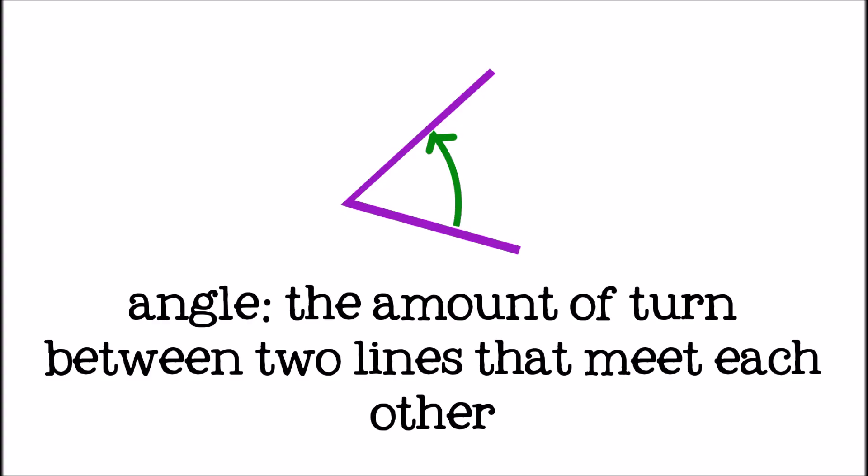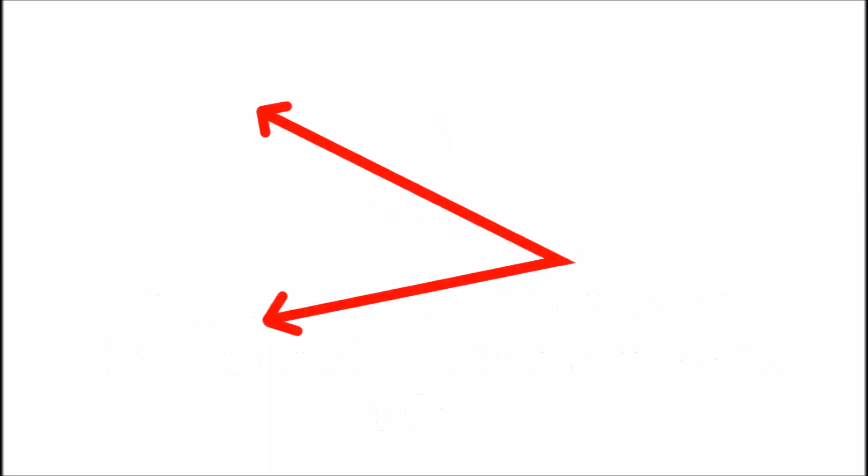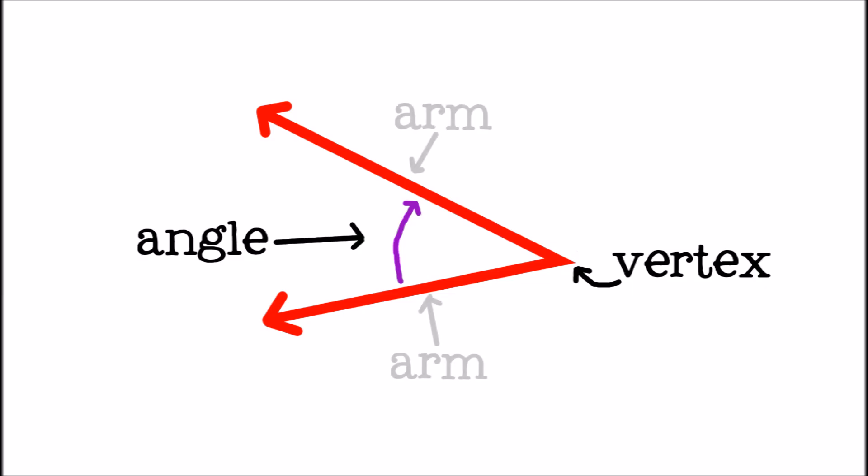An angle is the amount of turn, or space, between two lines that meet each other. When two lines meet at a point, or a vertex, an angle is formed. The two lines are called the arms of the angle.